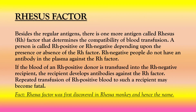Rhesus factor: besides the regular antigens, there is one more antigen called the Rhesus or RH factor that determines the compatibility of blood transfusion. A person is called RH positive or RH negative depending upon the presence or absence of the RH factor. RH negative people do not have an antibody in the plasma against the RH factor. If blood of an RH positive donor is transfused into an RH negative recipient, the recipient develops antibodies against the RH factor, and repeated transfusion of RH positive blood may become fatal. The Rhesus factor was first discovered in Rhesus monkeys, hence the name.